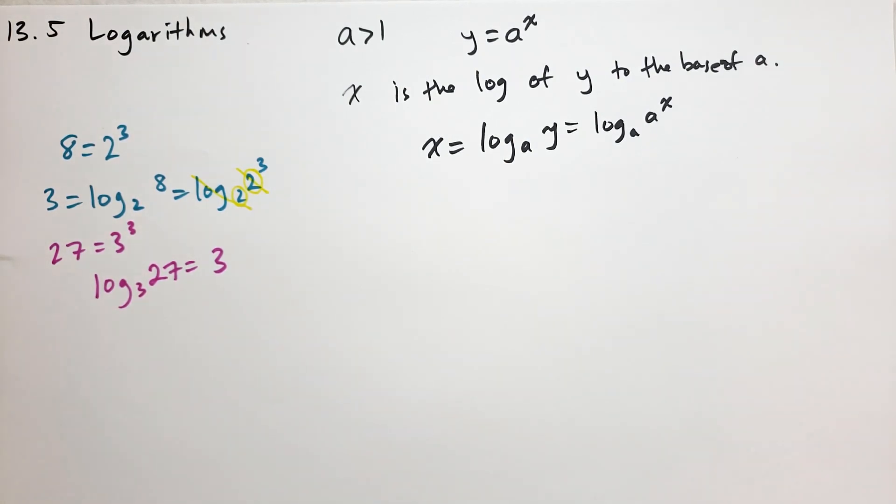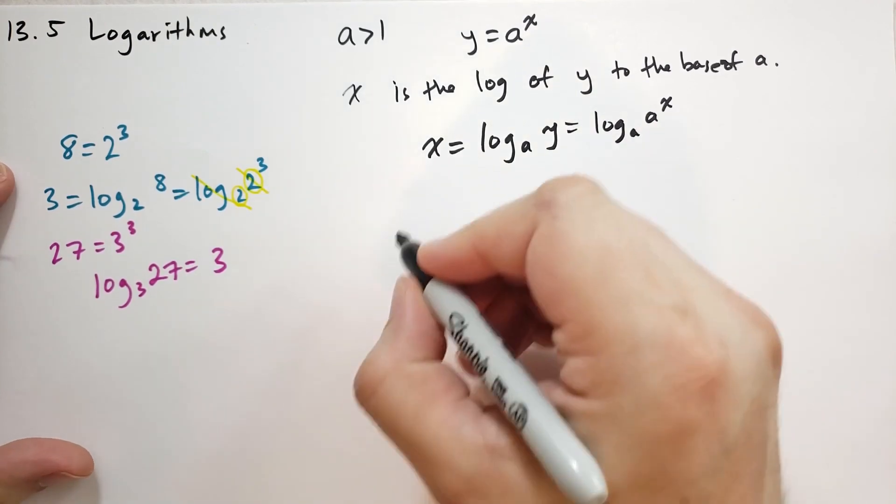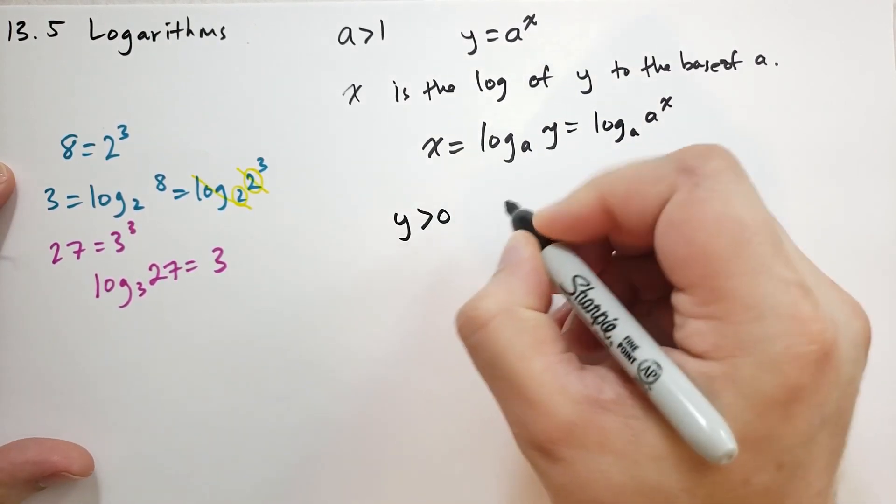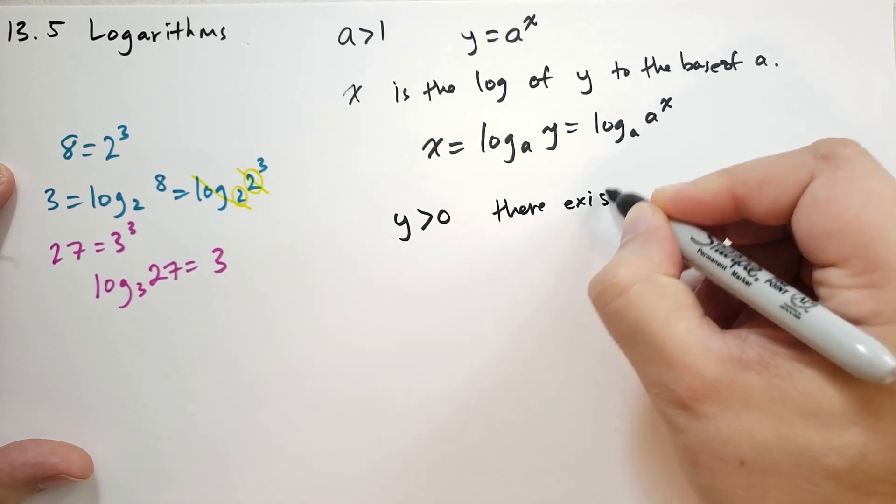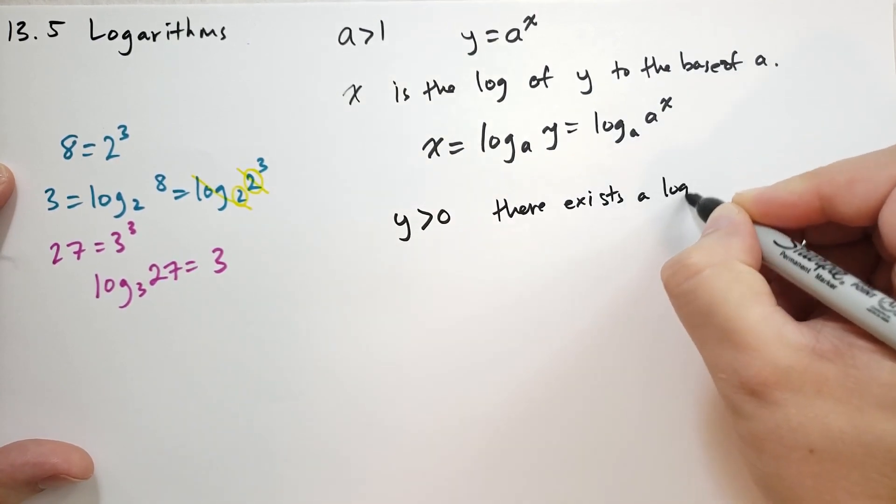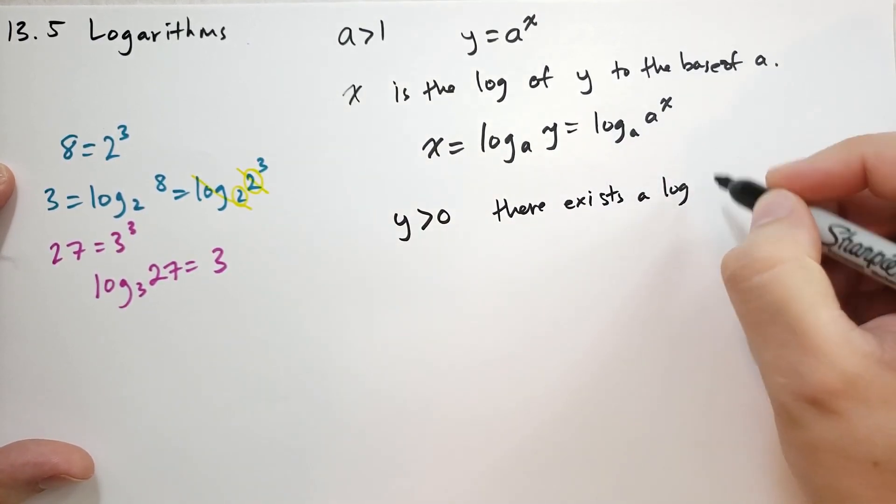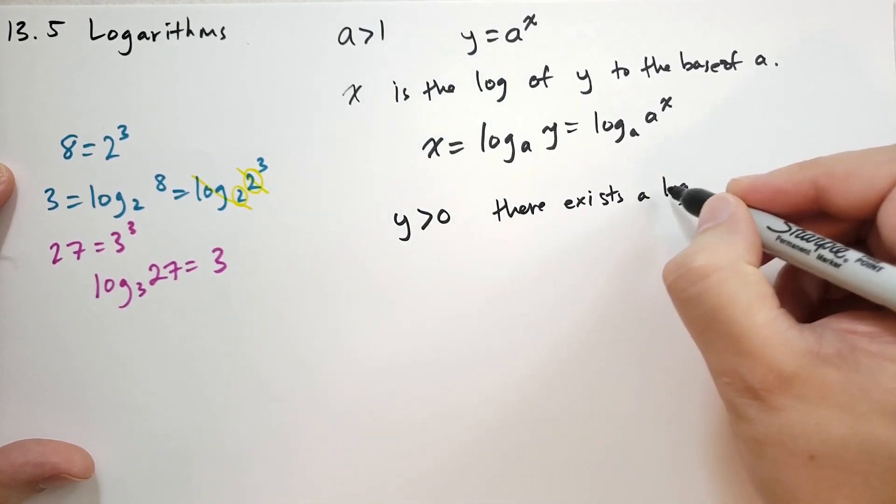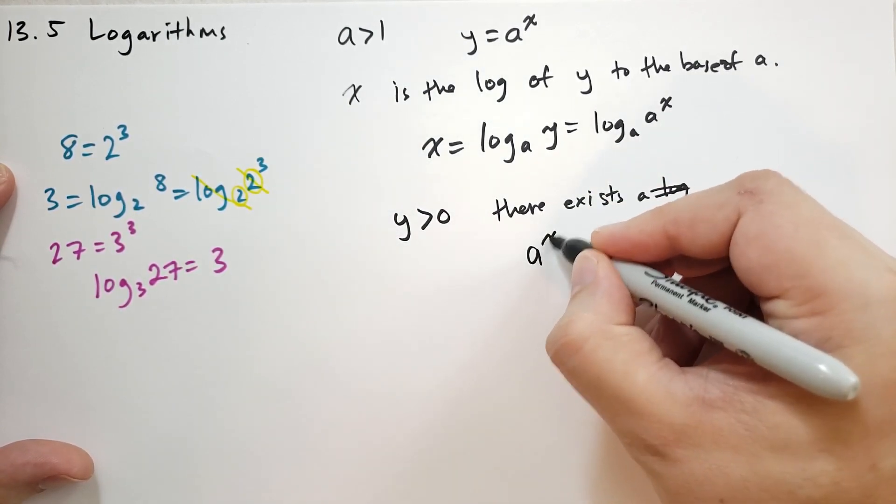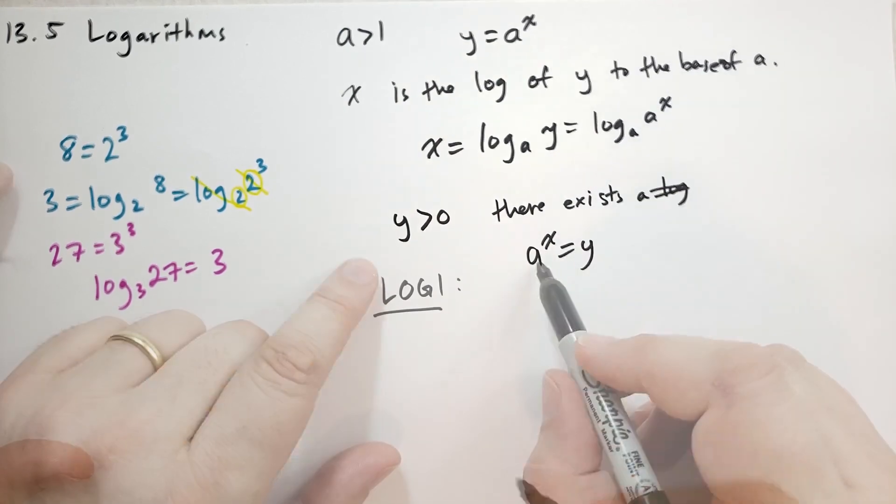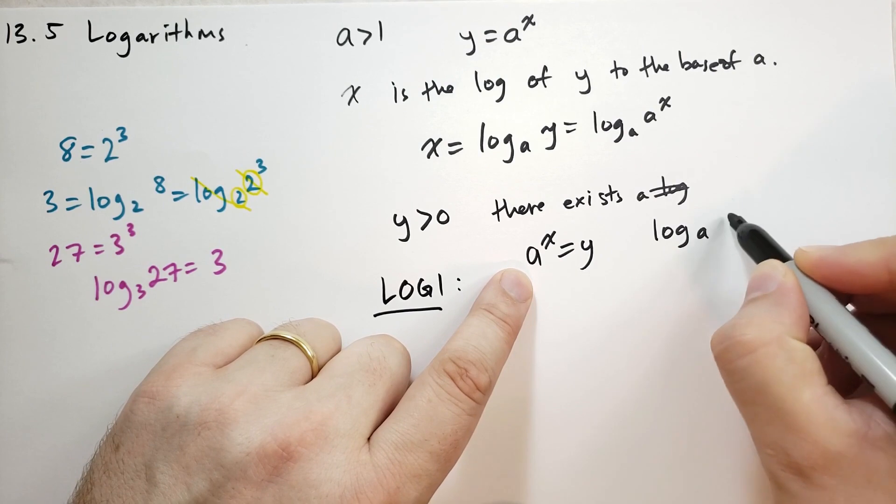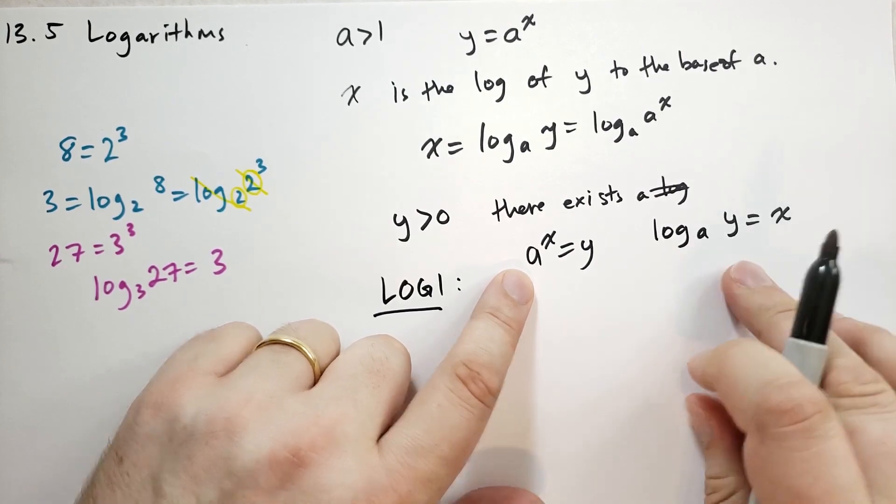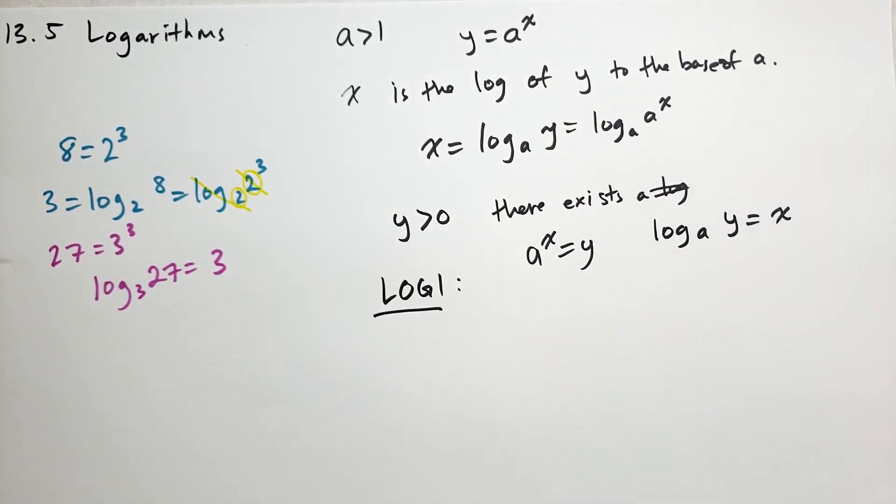Now, a couple more rules about logs. As long as y is greater than 0, there exists a number. There exists a number such that a to the power of x is equal to y. a to the x is equal to y. And so we can have log base a of y is equal to x. There is a solution to this formula.